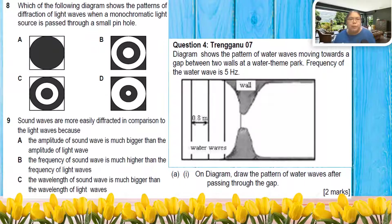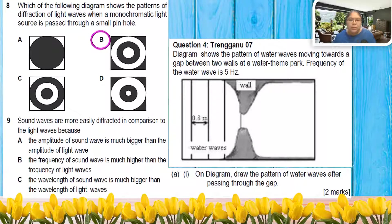Number eight: monochromatic light passes through a pinhole. Your answer is either B or D, because the center must be the bright color and the bright color must be bigger in size. So the answer should be B.